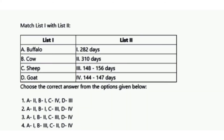The next is a match-the-following on gestation periods. List 1 has buffalo, cow, sheep, and goat. List 2 has 282 days, 310 days, 148 to 156 days, and 144 to 147 days. The correct answer is option 1: buffalo 310 days, cow 282 days, sheep 144 to 147 days, and goat 148 to 156 days.